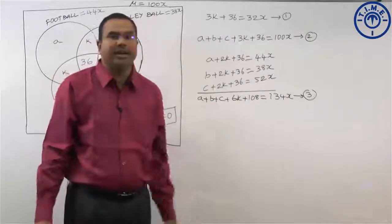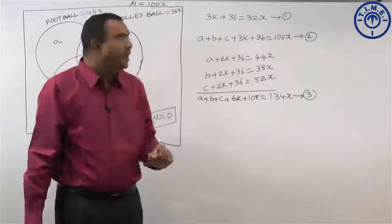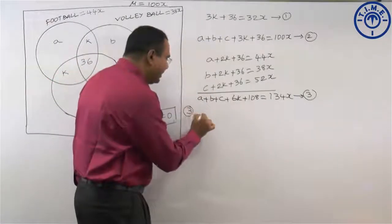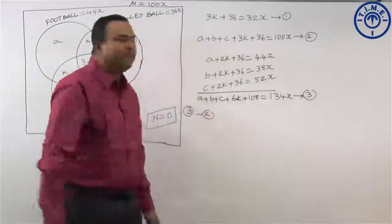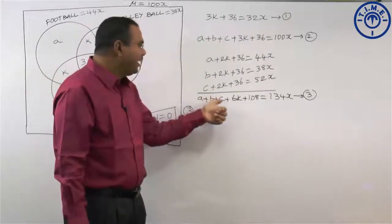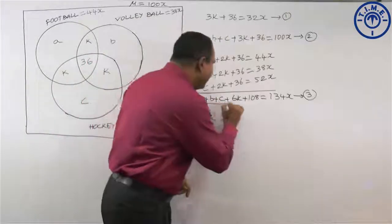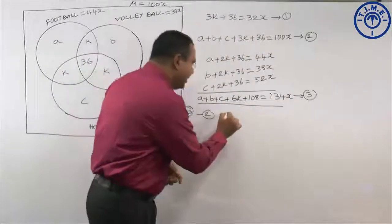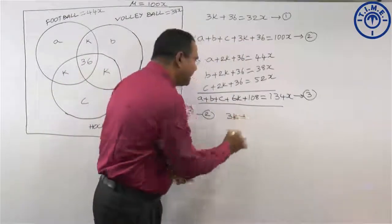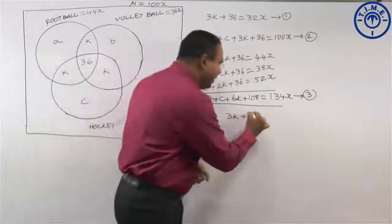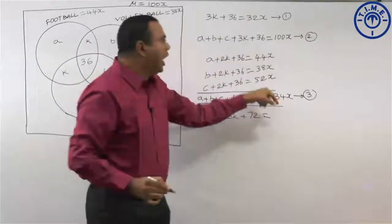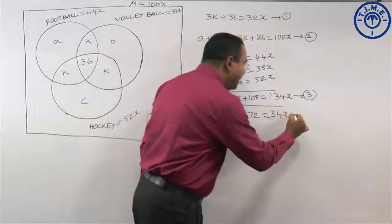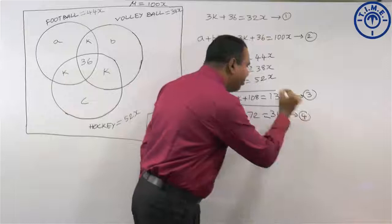Now let us solve equation 3 minus equation 2. A plus B plus C cancels out. We get 6K minus 3K plus 108 minus 36 equals 134X minus 100X, giving 3K plus 72 equals 34X. Let us call this equation 4.